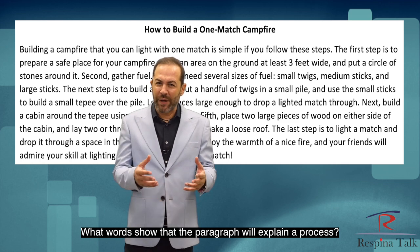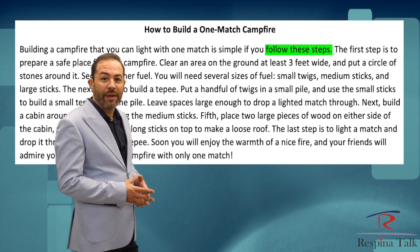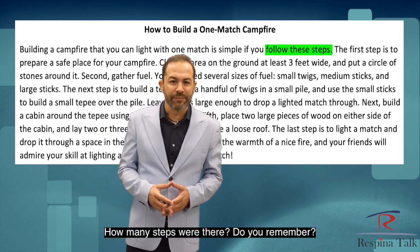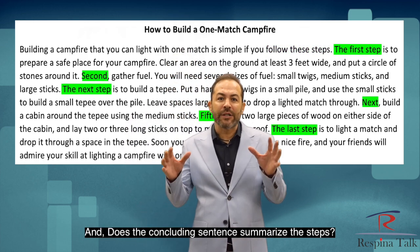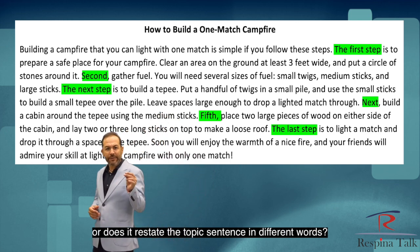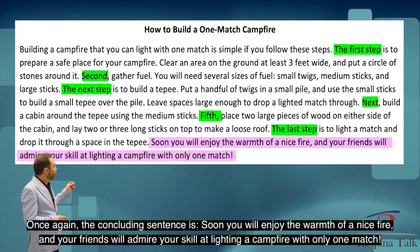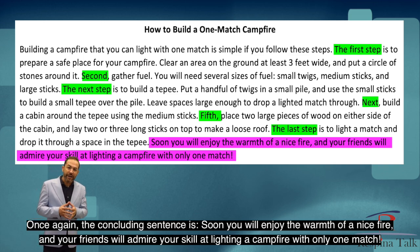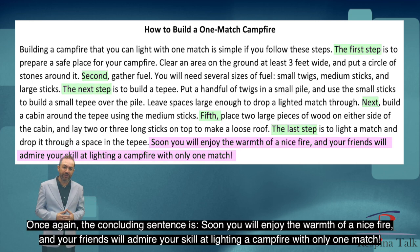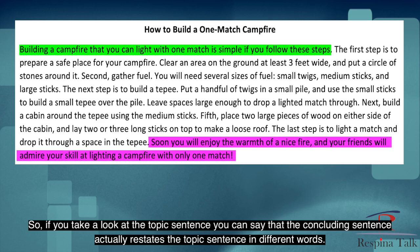What words show that the paragraph will explain a process? "Follow these steps." How many steps were there? That's right, six steps. Does the concluding sentence summarize the steps or does it restate the topic sentence in different words? The concluding sentence is: soon you will enjoy the warmth of a nice fire and your friends will admire your skill at lighting a campfire with only one match. The concluding sentence actually restates the topic sentence in different words.